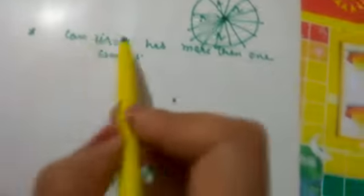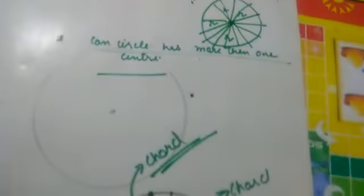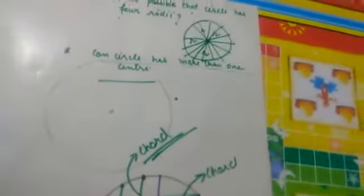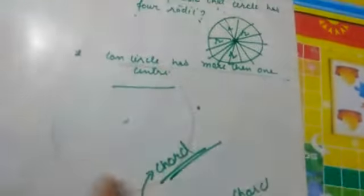The next question is: can a circle have more than one center? I am drawing a circle with a compass. Is it possible to draw the same circle by pointing the compass anywhere else? You can try it at home — the answer is it is not possible. You cannot draw the same circle by pointing the compass at a different point.